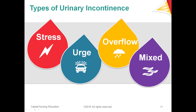Mixed incontinence involves a combination of stress and urge incontinence. Patients experience mild to moderate urine loss sometimes with physical activity, or acute urine loss without warning. Most patients are unable to distinguish between the two and receive treatment for whichever is most unbearable. Urinary frequency, urgency, and nocturia complement these symptoms as well.